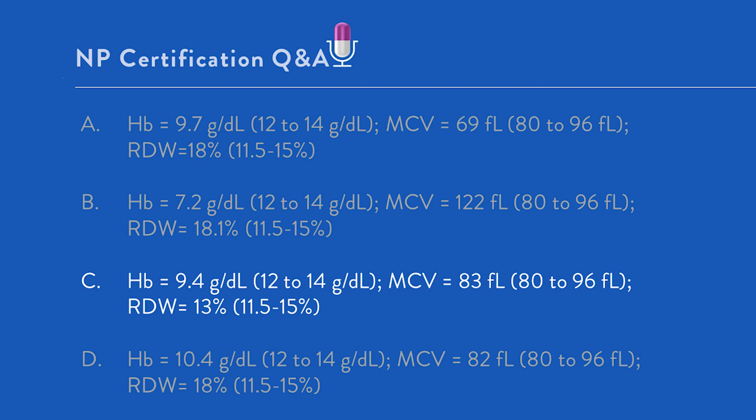You might first glance at that and say, this is a really specific question about a person with CKD. And when you dig a little bit deeper, what you find out is this is diagnosing a person who has a type of anemia of chronic disease.